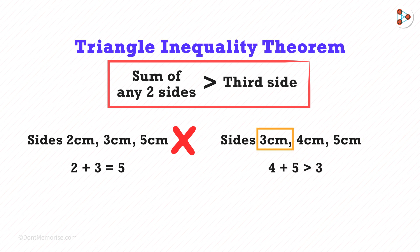4 plus 5 is 9 which is greater than 3 and 3 plus 5 is 8 which is greater than 4. In this case, the sum of any two sides is greater than the third side. It means it is possible to draw a triangle with these dimensions.